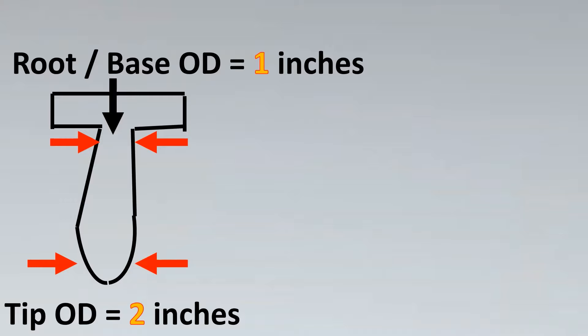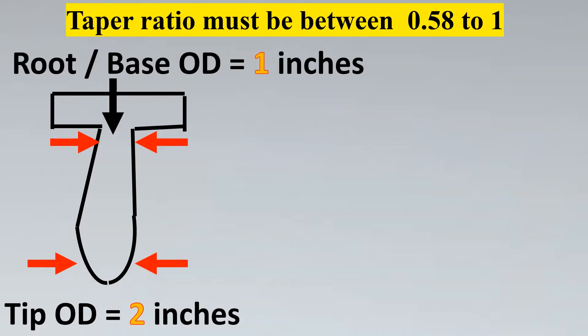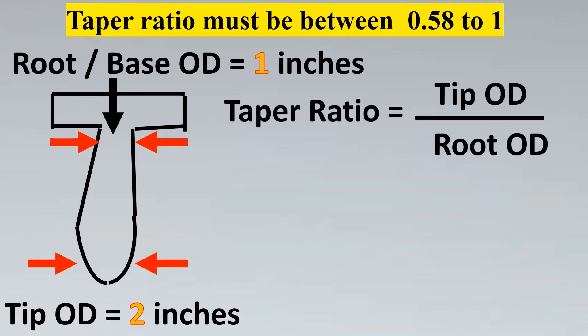But remember what was our criteria as per ASME standard? It was 0.58 to one. Now here let us see what happens. The taper ratio was nothing but tip OD to root OD. Now here the taper ratio is going to be two by one and the ratio is going to be two. So here it has violated the taper ratio criteria as per standard. And you would see that maximum we can keep the tip OD equal to the root OD. So the ratio then would be one which is the maximum limit here.